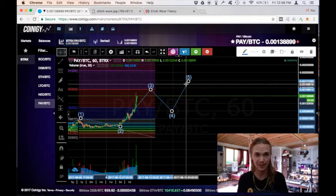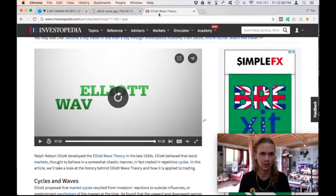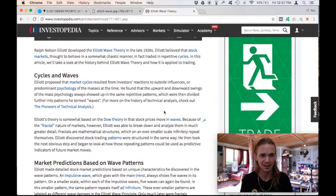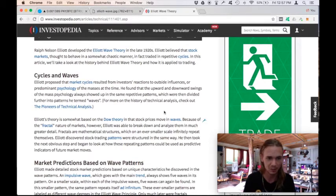So where did the Elliott wave come from? Let's take a quick look at Investopedia here. Ralph and Nelson Elliott developed the Elliott wave theory in late 1920s. Elliott believed that stock markets, thought to behave in somewhat of a chaotic matter, in fact traded in these repetitive cycles. So here we go. We'll just jump right in.